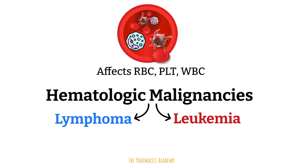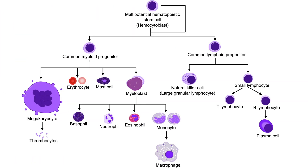Within the bone marrow that contains hematopoietic stem cells, it starts with a multi-potential hematopoietic stem cell, which can differentiate into any type of blood cell. The cell lineage splits into two categories: myeloid and lymphoid lineage. The myeloid lineage gives rise to red blood cells, platelets, and certain white blood cells. The lymphoid lineage gives rise to only white blood cells — the lymphocytes.